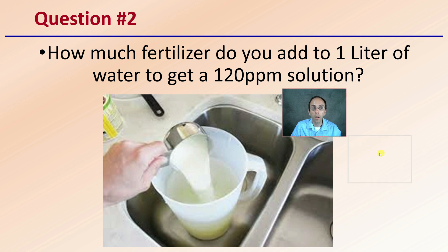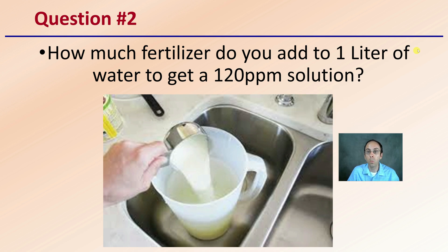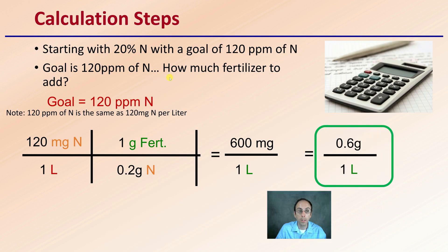Now let's go to question two: how much fertilizer would you add to one liter of water to get 120 parts per million? We've upped the concentration to what's considered ideal for cannabis. We're still starting with the same 20% nitrogen, but now our goal is 120 parts per million. The setup is basically the same except we've changed 100 to 120. It's still 0.2 grams of nitrogen per gram of fertilizer. Multiply everything on top, divide by the bottom, and we get 600 milligrams per liter, or 0.6 grams per liter.